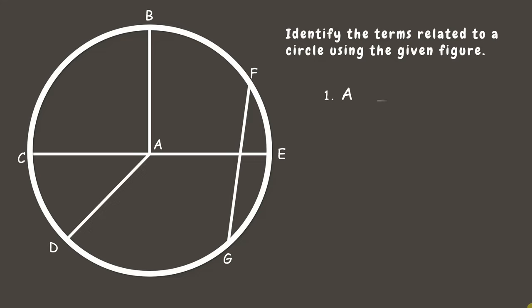First is point A. We can see that point A is found at the center of the circle. Point A is called center.